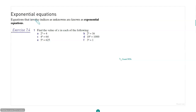You can use your laws of indices to solve exponential equations. Exponential equations are equations that involve indices as unknowns. For example, 2 to the power x is equal to 4. Here, the unknown is an index. Similarly, for all these equations, like 3 to the power x equal to 1 — this is an exponential equation because the unknown is an index.